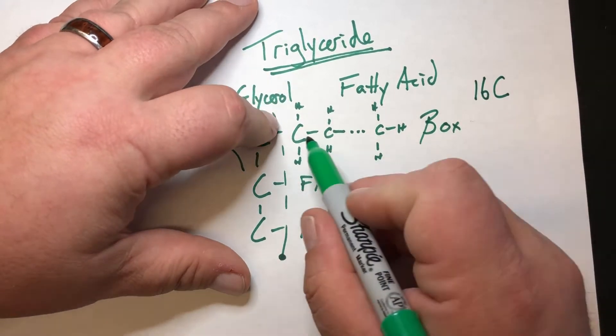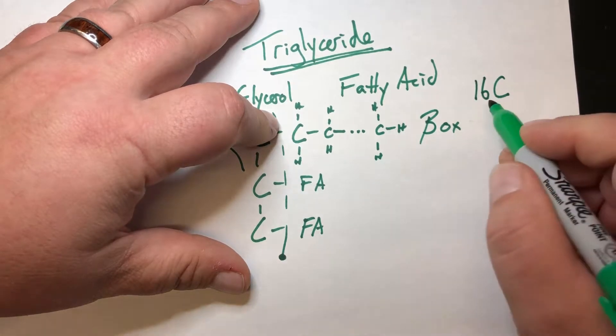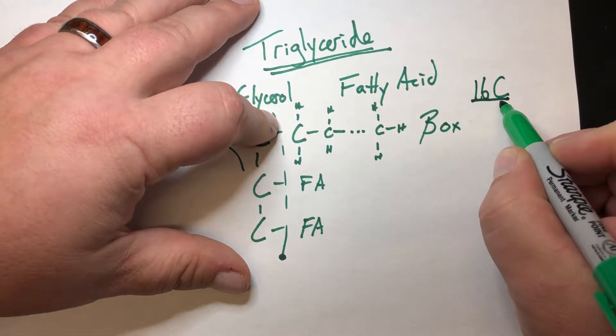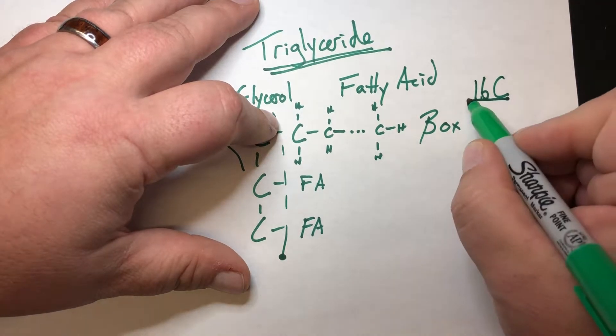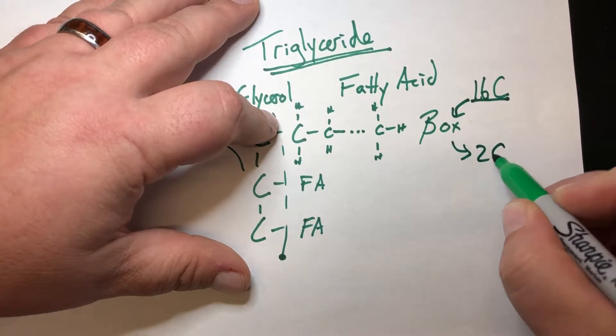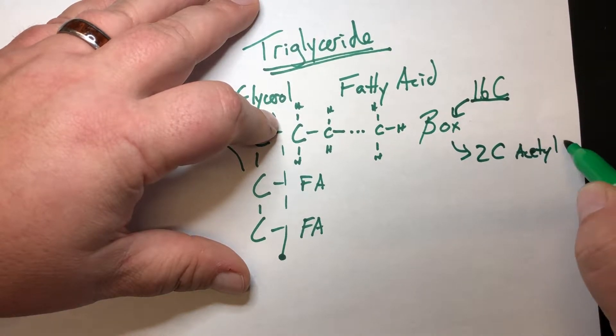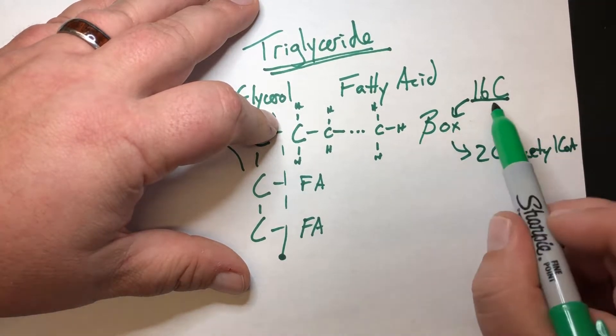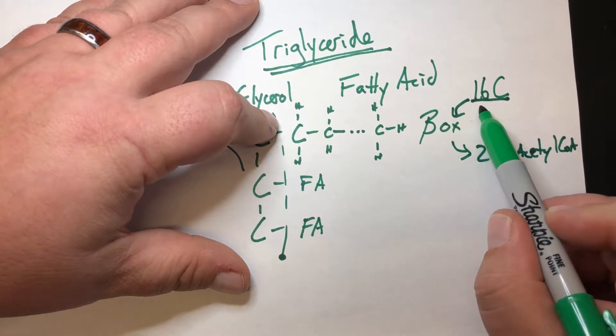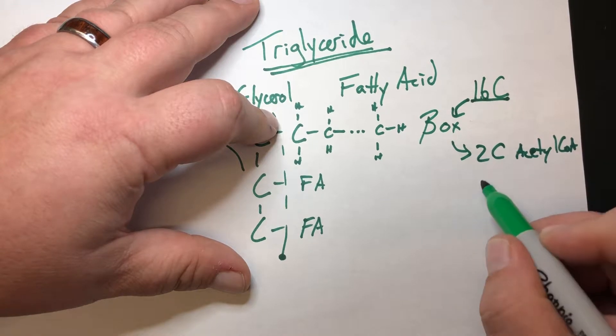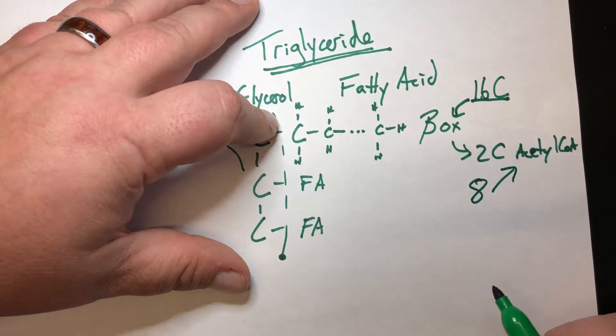So essentially we would rip off this fatty acid chain, and then we're going to take the 16 carbons and then break them apart into groups of two in order to make those two carbon acetyl-CoAs. And so if we start with 16 carbons, through beta-oxidation, 16 divided by 2, we can make eight acetyl-CoA molecules.